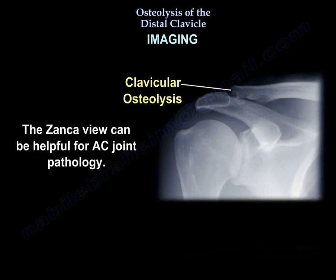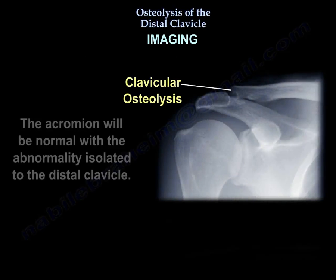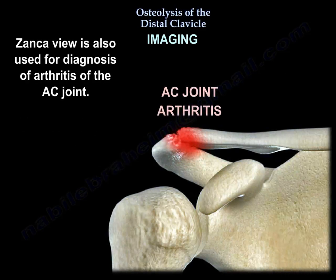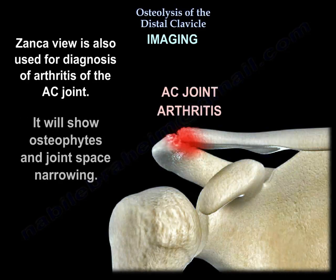These views can be helpful for AC joint pathology. The acromion will be normal with the abnormality isolated to the distal clavicle. The Zanca view is also used for the diagnosis of arthritis of the AC joint and will show osteophytes and joint space narrowing.